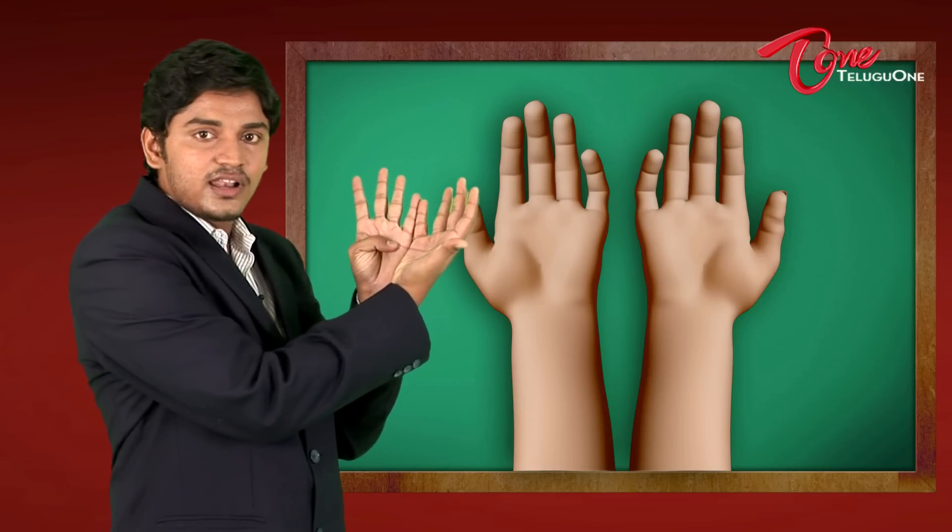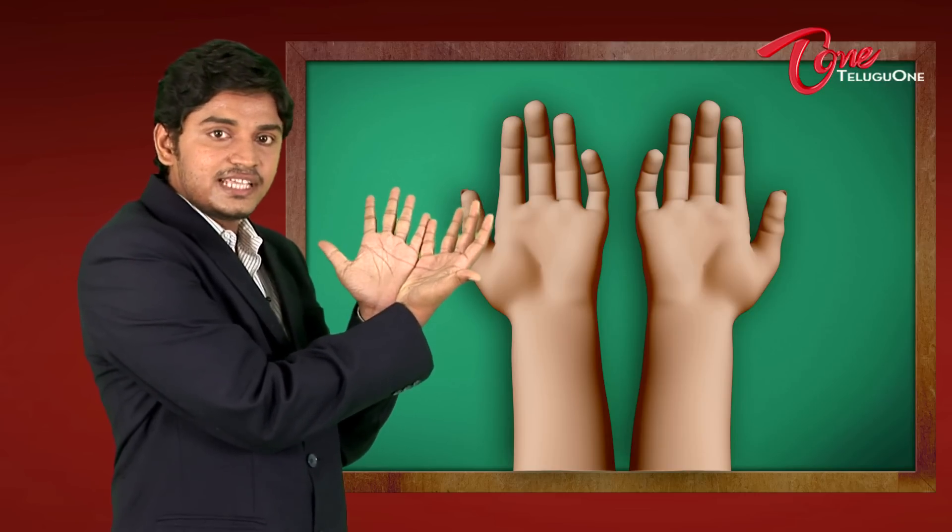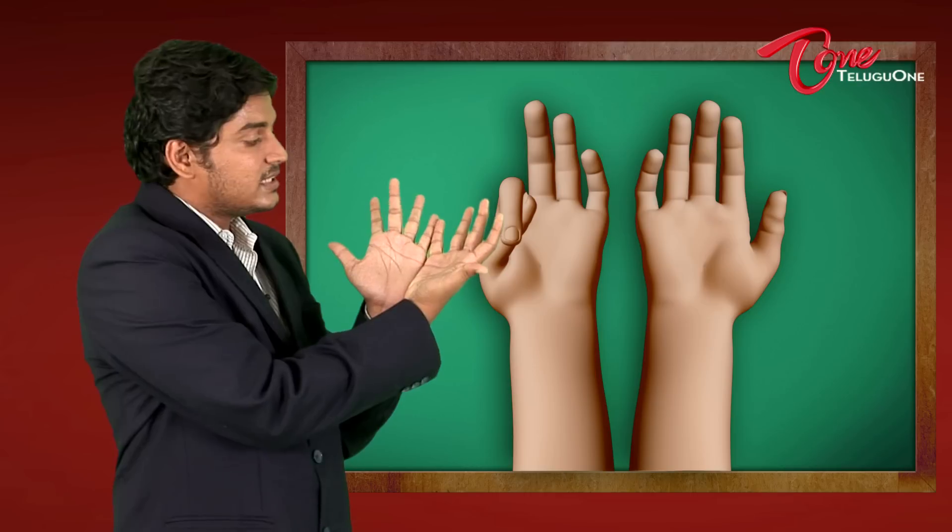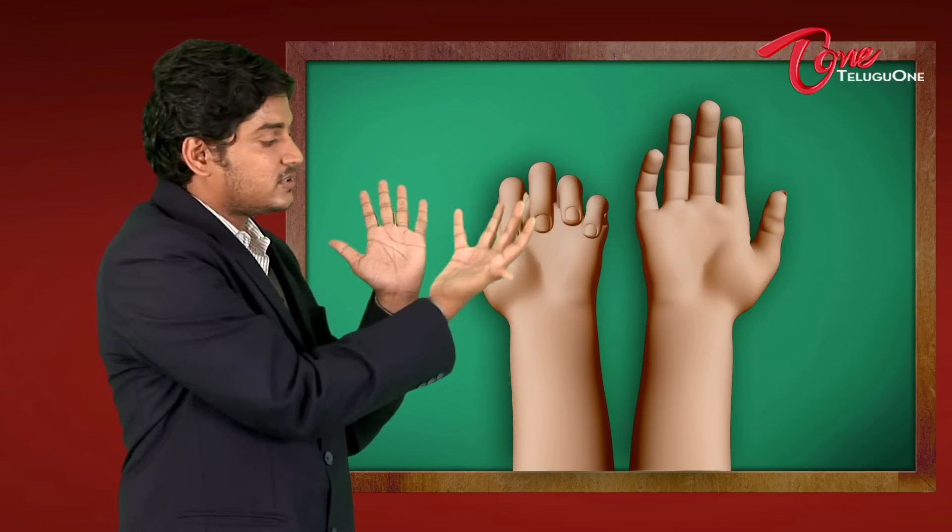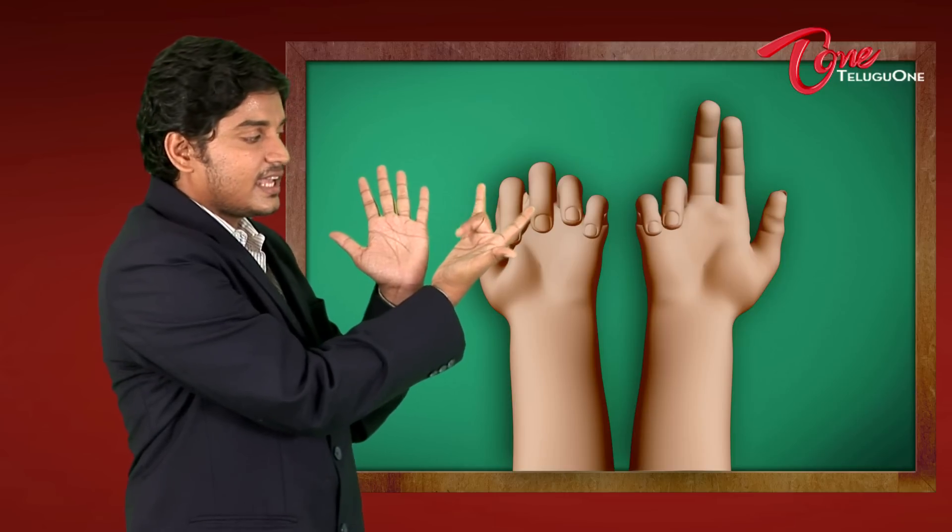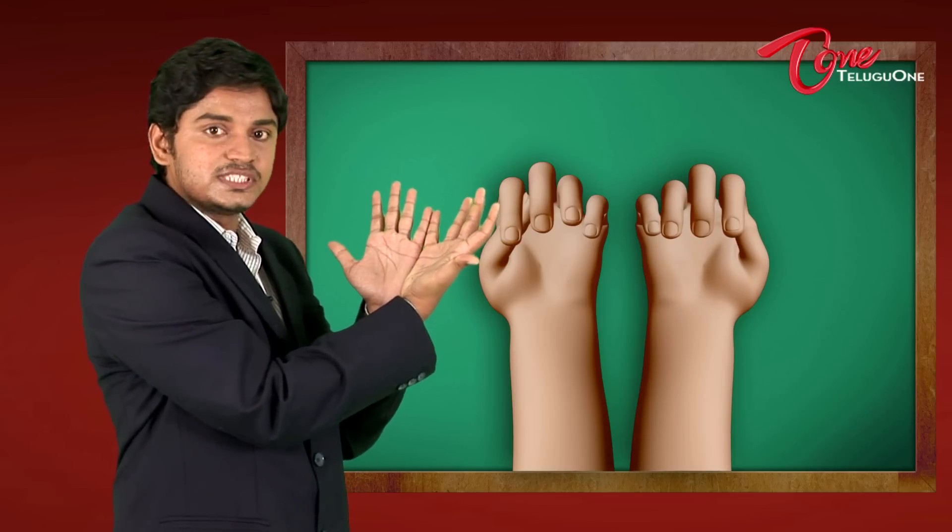So I start from 1. So whenever I say 1, you're going to close the first finger. Next, 2. Then 3, 4, 5. Then I jump onto my other hand to start with 6, 7, 8, 9 and 10. So now I'm going to show you these hands on the board.